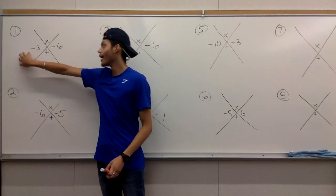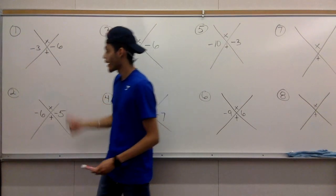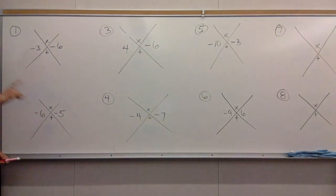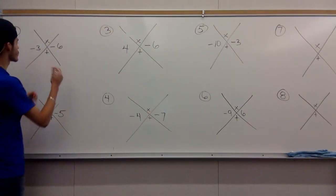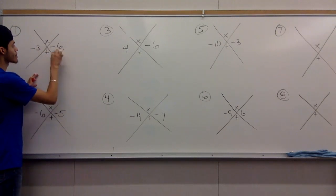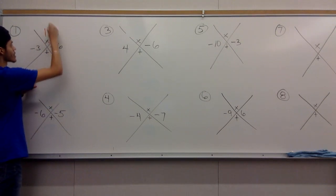Let's start with number one. Negative three times negative six. We have two negatives and you know two negatives make a positive. So negative three times negative six would give you the answer of positive 18.